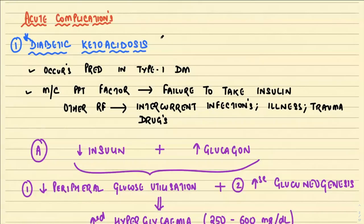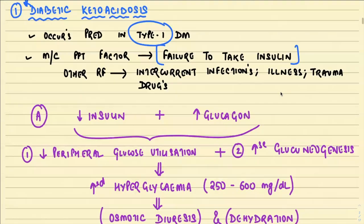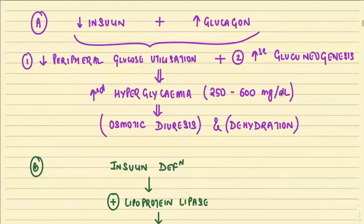The first acute complication is diabetic ketoacidosis. It occurs predominantly in type 1 diabetes mellitus and the most common precipitating factor is failure to take insulin. Other risk factors such as infection, illness, trauma, and drugs can also precipitate diabetic ketoacidosis.